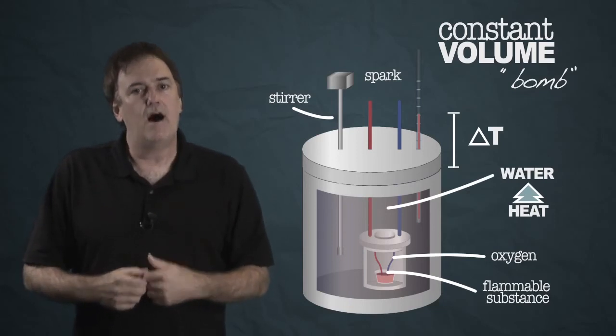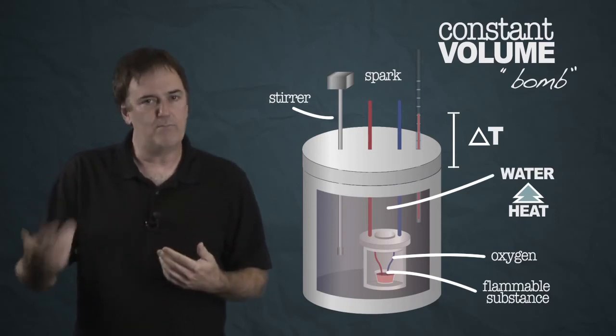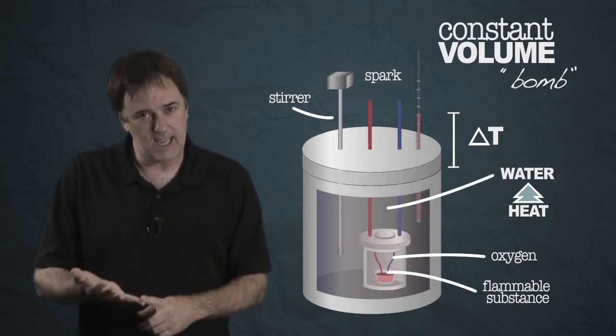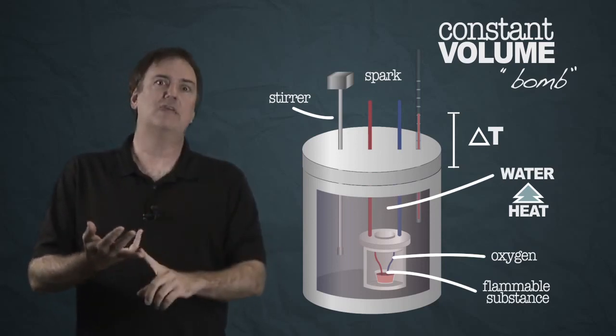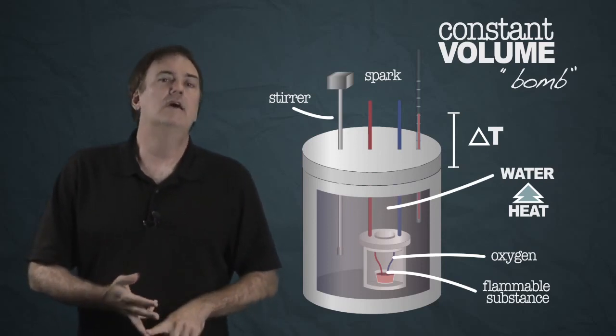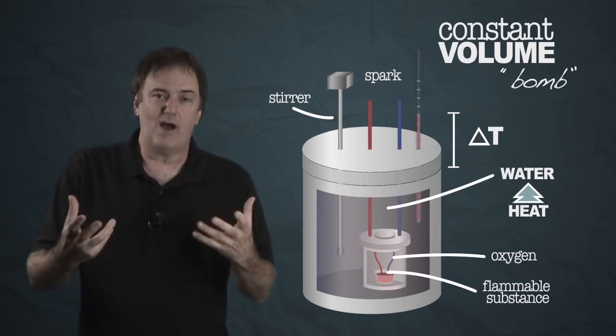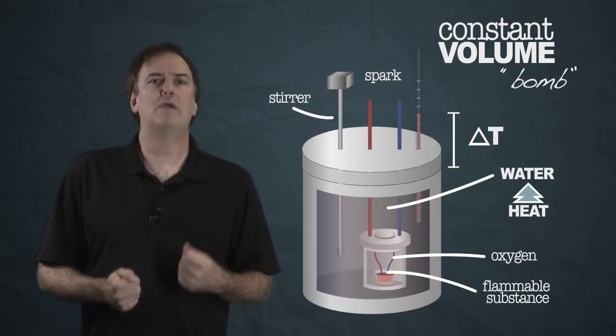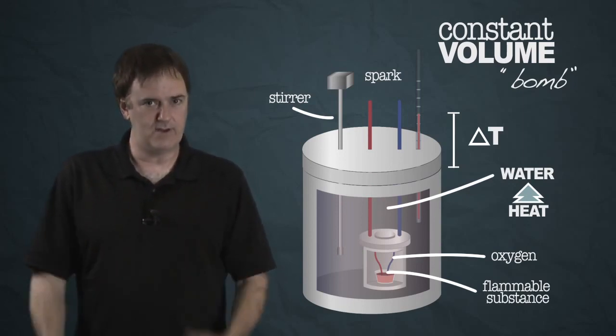That's the basis of calorimetry. It works for bomb, it works for coffee cup. And that's how we get the values of delta H for reaction, and we get delta E for reaction. So you'll see lots of problems in your book on calorimetry, and it's a really powerful technique on how we get all these values in thermodynamics.